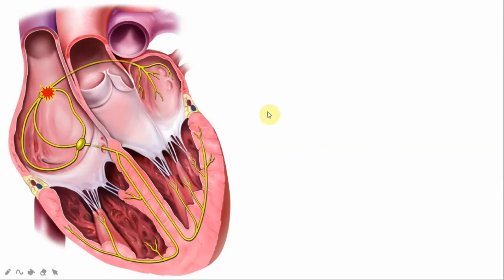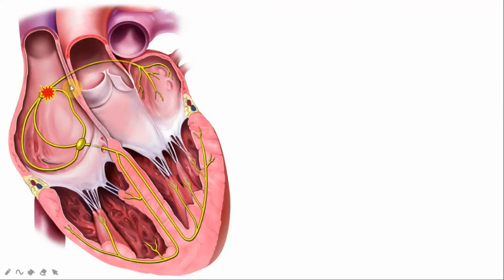Let's look at some animations for a good understanding of the conduction system of the heart. This is the right atrium, tricuspid valve, right ventricle, interventricular septum, left atrium, left ventricle, aortic valve, mitral valve, and tricuspid valve. In yellow is the conduction system. The SA node generates a cardiac impulse, which is transmitted through the three inter-atrial pathways to the AV node where there is a delay due to the refractory period. Then the impulse goes to the His bundle, right and left bundle branches, Purkinje fibers, and myocardial fibers.